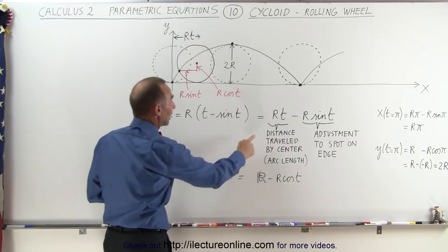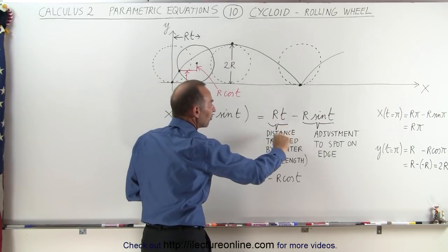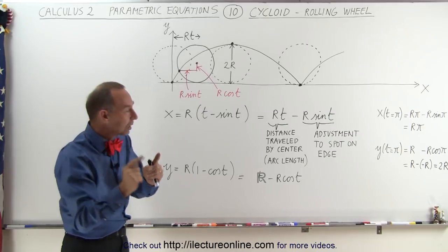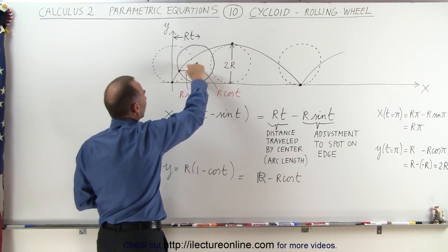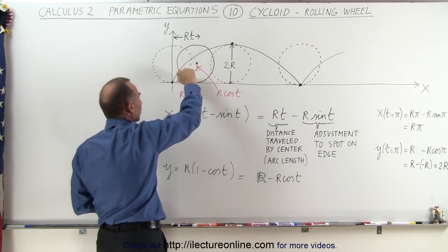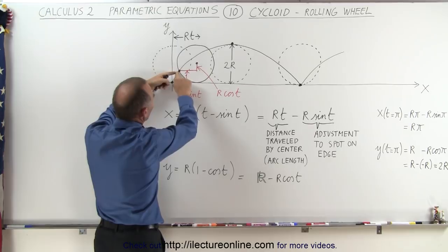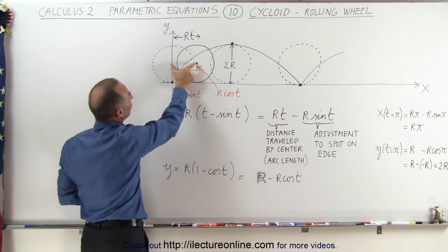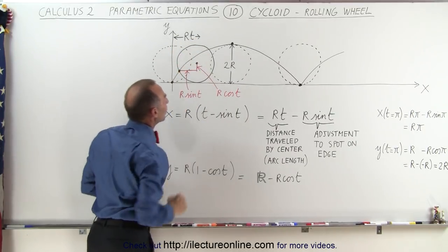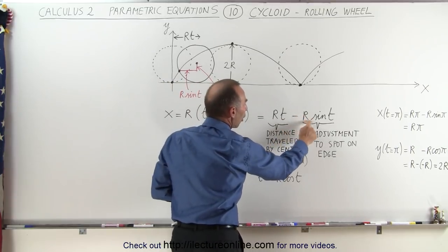If we expand this out, we get the value for x as rt minus r times the sine of t. Now rt represents the distance traveled by the center, which is also equal to the arc length along the wheel or tire. The distance from there to there — which would be the arc length — if we draw an angle right here, and lines from point to point, that defines the angle. The distance traveled by the center equals the distance along the edge of the wheel from where it's touching the ground to where the point started, which is also equal to rt, the distance the center of the wheel has traveled.